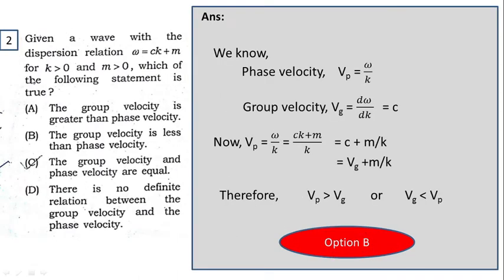This is the second question. Given a wave with the dispersion relation omega equal to ck plus m, where k and m both are greater than zero, and the question is which of the following statement is true. In the four options there are group velocity and phase velocity, and the relation between them we have to find out. The phase velocity we know Vp equal to omega by k, and the group velocity Vg equal to d omega by dk.